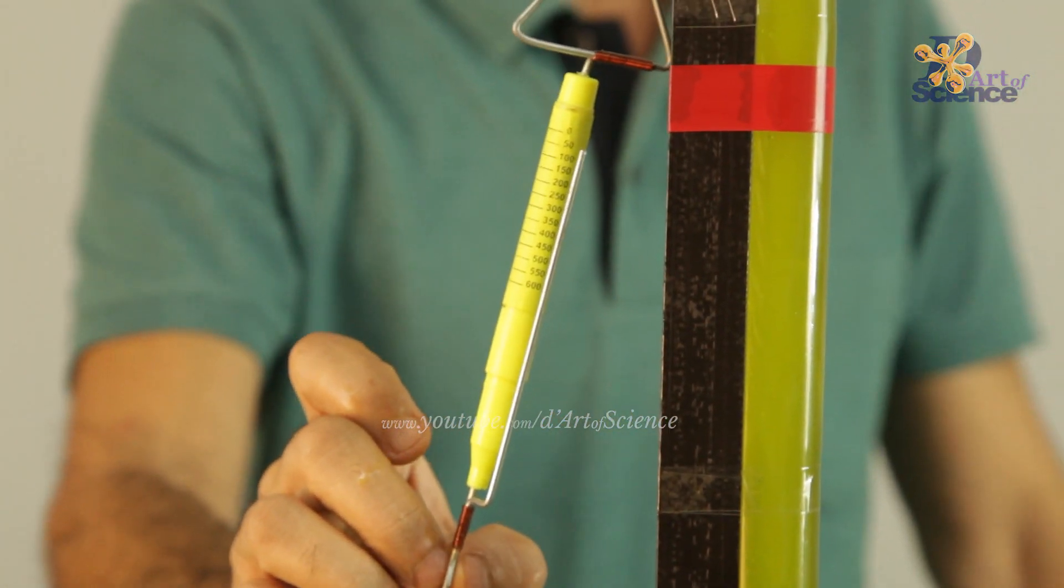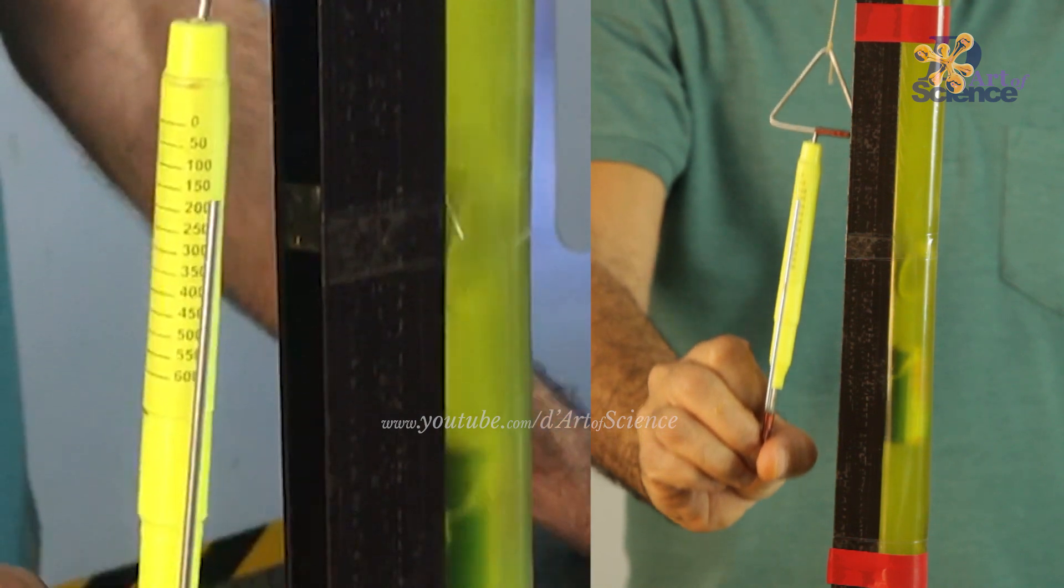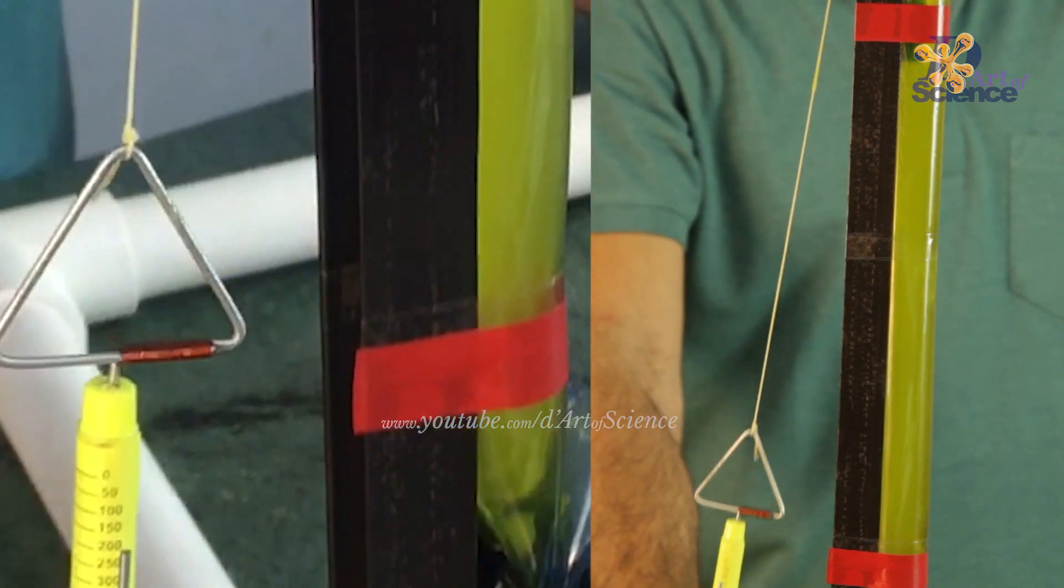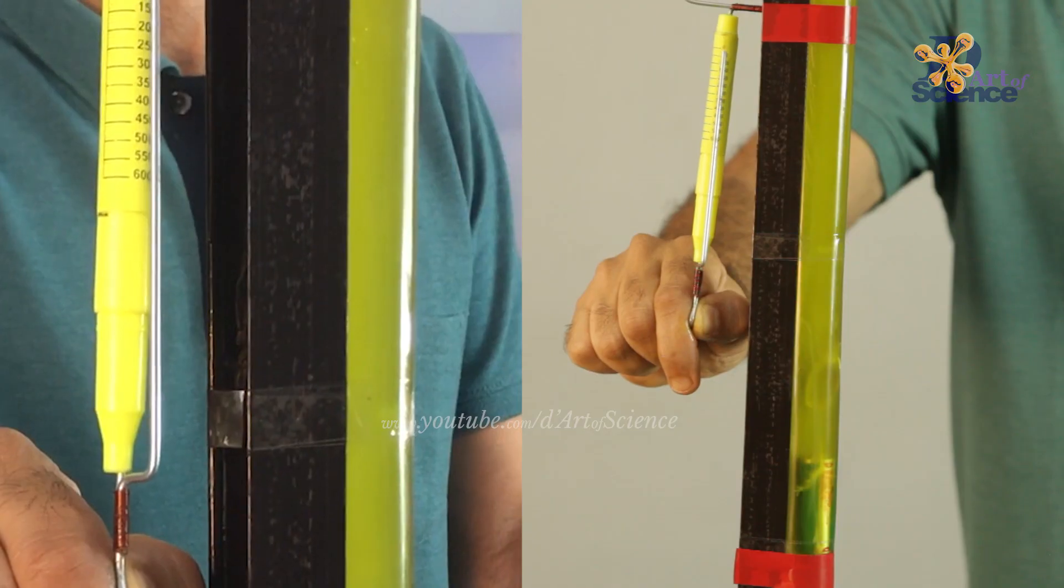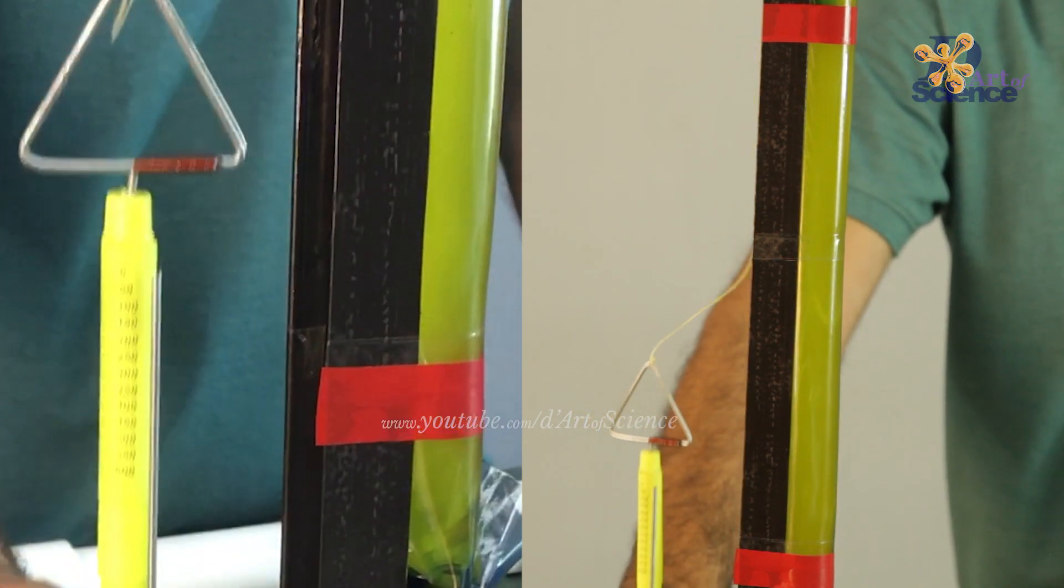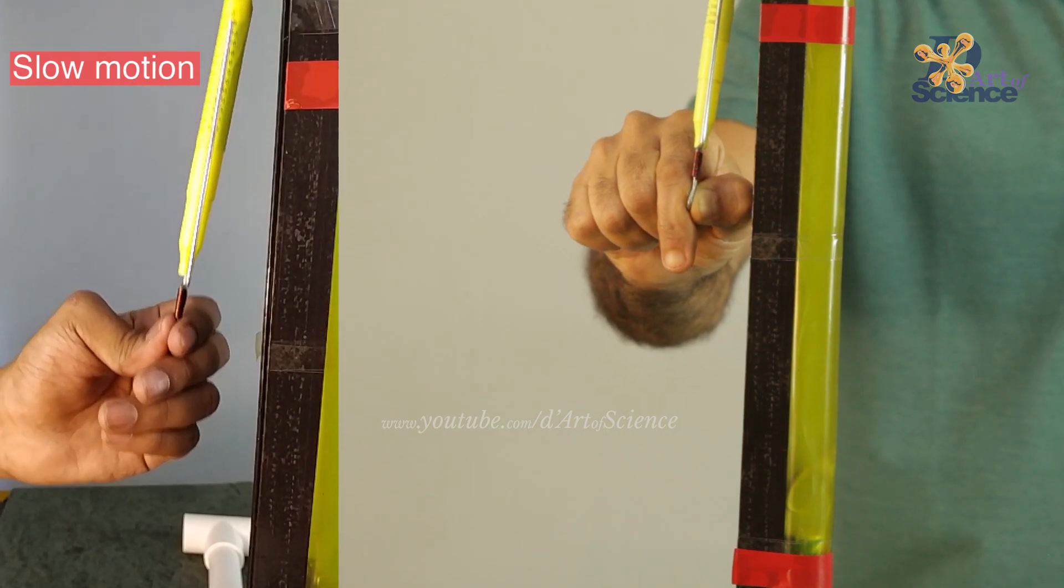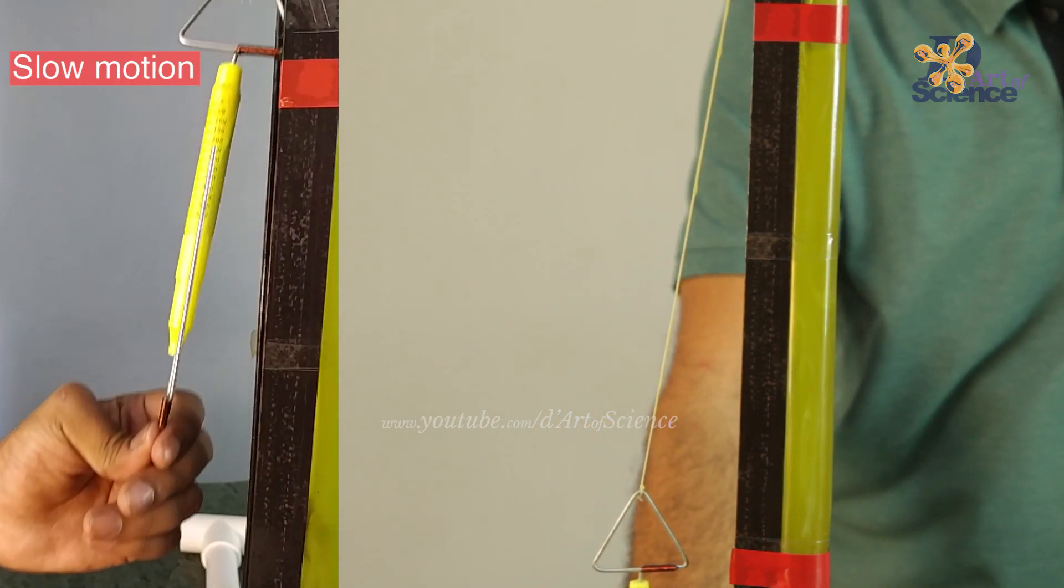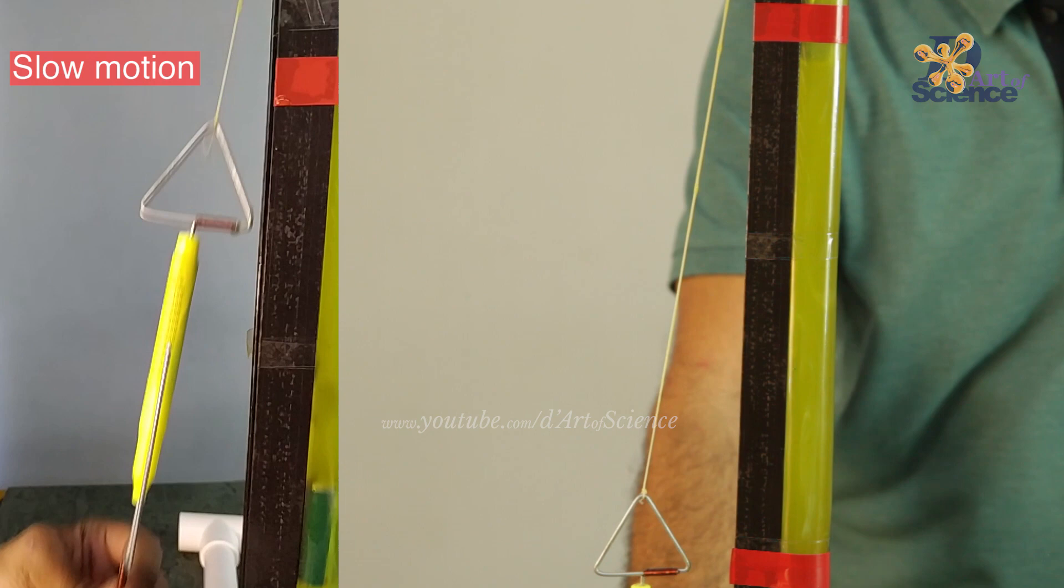Now once you can pull slowly and see what the reading shows. It showed a reading of about 200 grams on the spring balance. Slightly faster, it goes to about 350 grams. And when I pulled it really fast, it went up to 500 grams. Hence proving that the higher the speed of the object, more the friction.